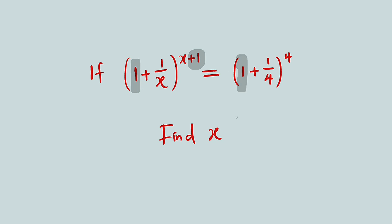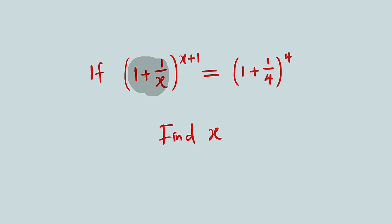We have 1 here and 1 here, and we have x and we have 4. This expression is raised to the power of 4 while the other is raised to the power of x plus 1 — they have only the difference of this plus 1. So how can we overcome this problem? Let me start by simplifying 1 plus 1 divided by x.